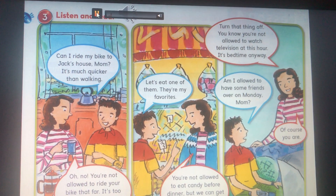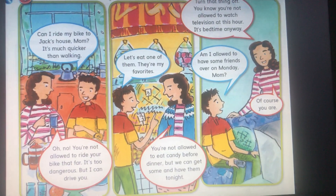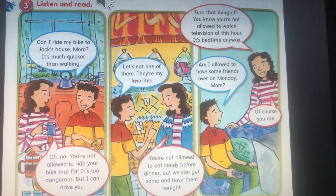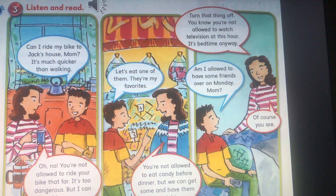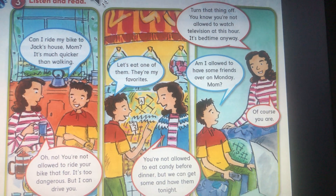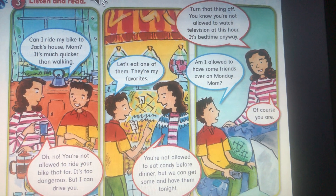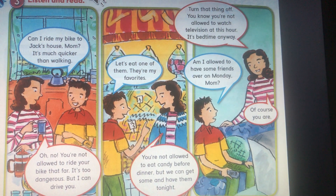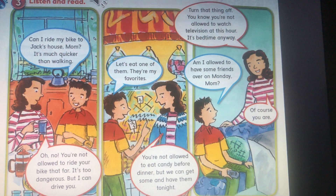Unit 8, Lesson 3, Page 101, Exercise 3 — Listen and read. 'Can I ride my bike to Jack's house, Mom? It's much quicker than walking.' 'Oh, no. You're not allowed to ride your bike that far. It's too dangerous. But I can drive you.'